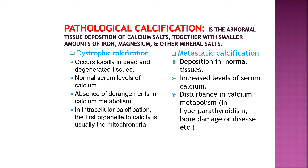Metastatic calcification, on the other hand, is the deposition of calcium in normal tissue, and there are increased levels of serum calcium. Usually there is a disturbance in calcium metabolism, such as in hyperparathyroidism, bone damage, or disease.